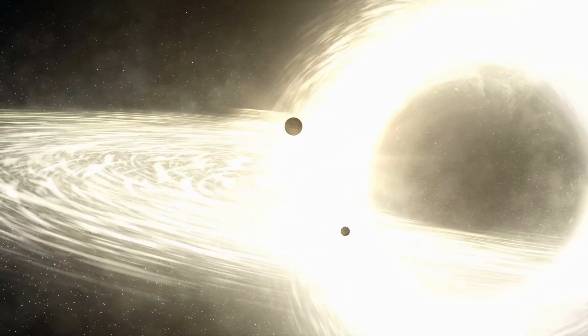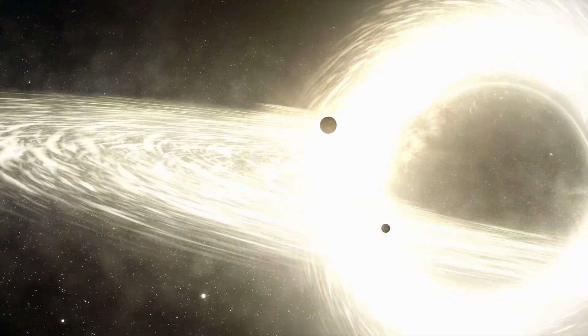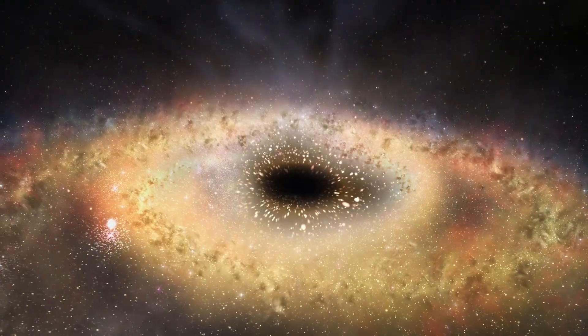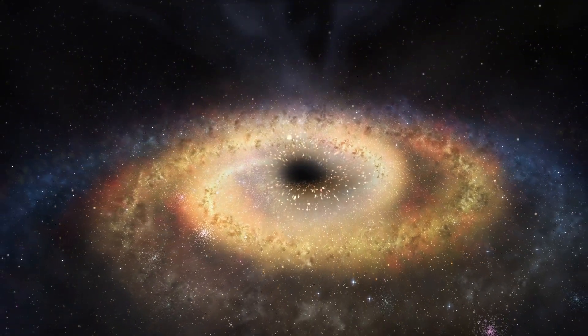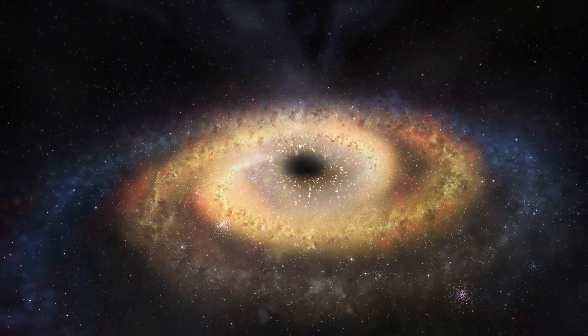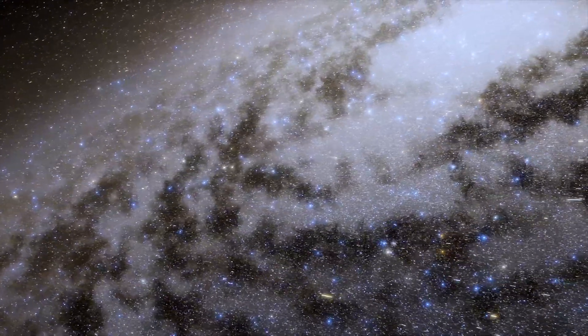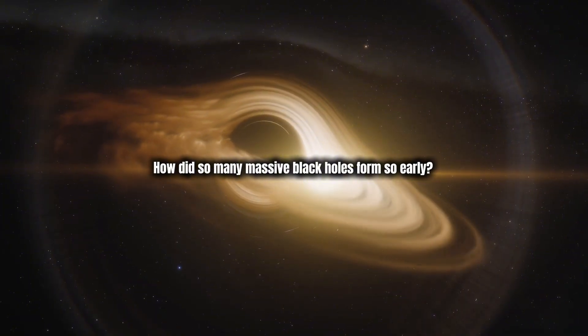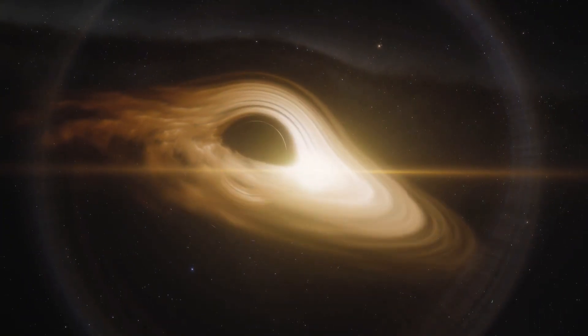Some skeptics have proposed that maybe we're not seeing galaxies at all. Maybe we're seeing active supermassive black holes instead, which can be very bright. But that theory doesn't help much either. Because as Maga's team points out, it just replaces one mystery with another. Instead of wondering how so many stars formed so early, now we're left asking, how did so many massive black holes form so early?